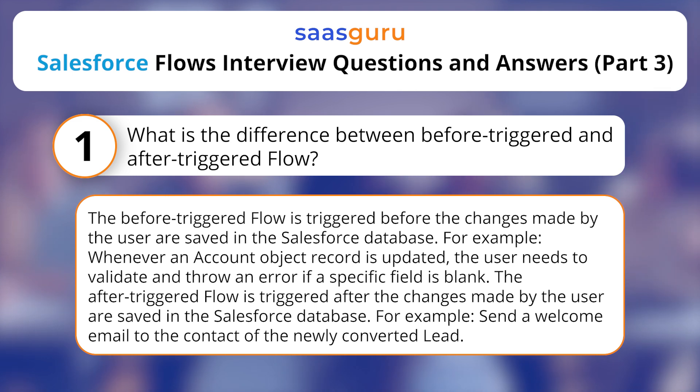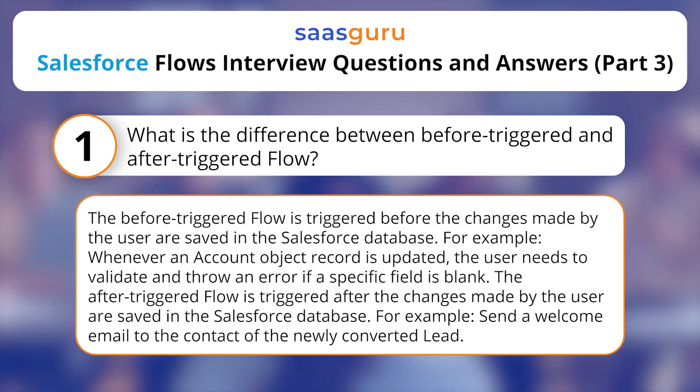The After Triggered Flow is triggered after the changes made by the user are saved in the Salesforce database. For example, send a welcome email to the contact of the newly converted lead.